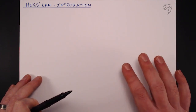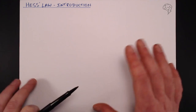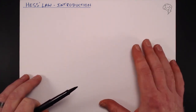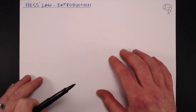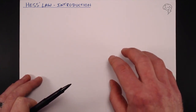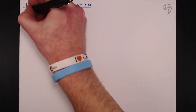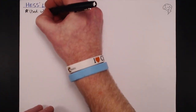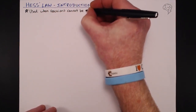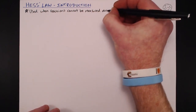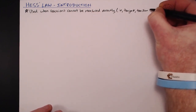We are off and running with Hess's law. This tutorial is an introduction to what Hess's law is and the situations where you're going to need to use it. Hess's law is all about enthalpy changes. We've looked at enthalpy changes we can measure in the lab, but Hess's law is about enthalpy changes that we can't measure directly — when reactions are too fast, too slow, or just impossible to measure.